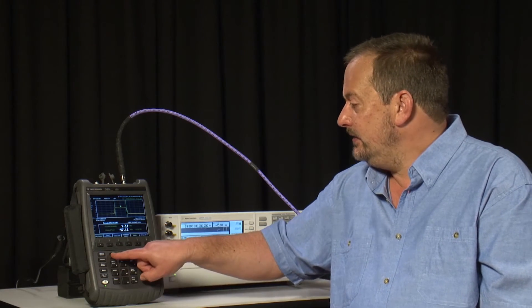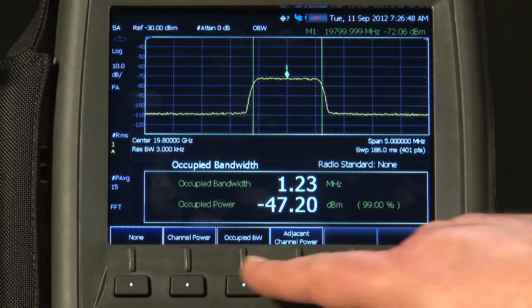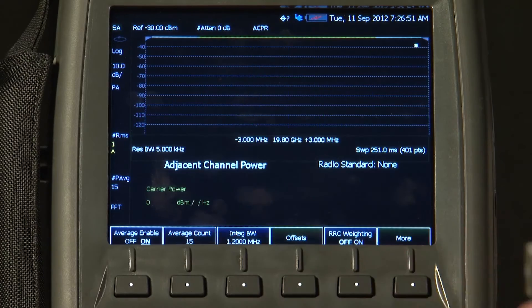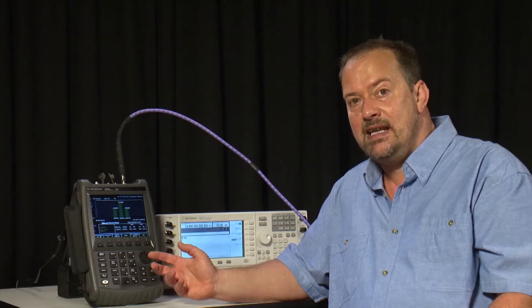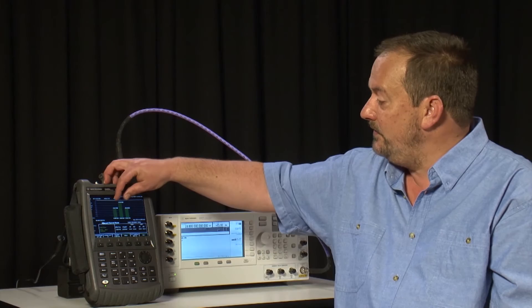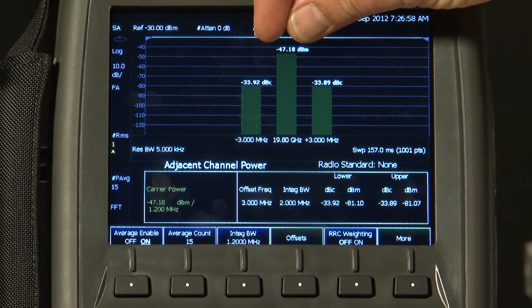And the final channel measurement that you may be interested in is adjacent channel power. Now adjacent channel power is very similar. Again, it is integrating under the curve of the main signal, but if you want to know how much of your